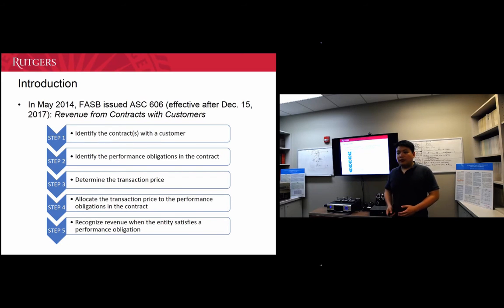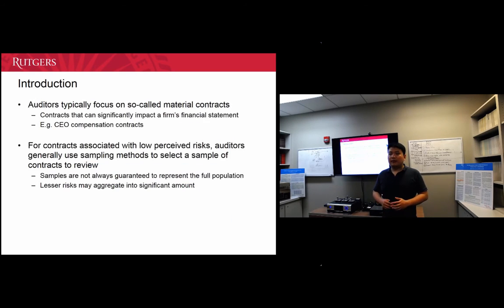Also, the newly issued ASC 606, which specifies the five-step process before recognizing revenue from contract-based sales, will require a substantial amount of responsibilities in examining the content in contracts. So with that in mind, there's an increasing burden for auditors to examine the content of contracts.